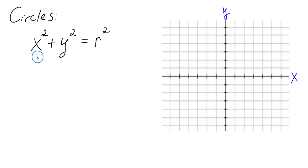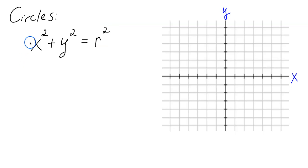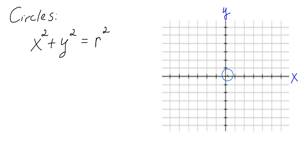If you see an equation in this form — x squared plus y squared equals r squared — the graph will be a circle, and the center will be at the origin, right here at (0, 0). And r represents the radius.